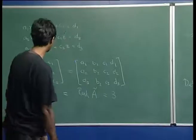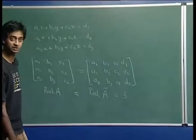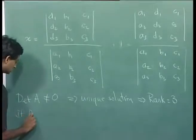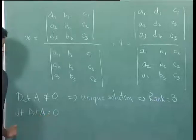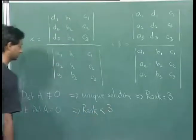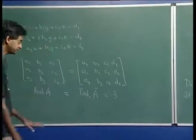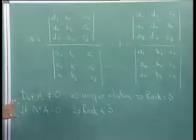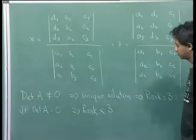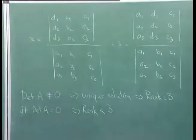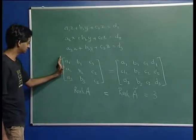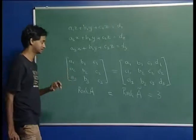The condition for a unique solution to exist is that the determinant should not be equal to 0, or equivalently the rank should be 3. It follows that if determinant A equals 0, then rank is less than 3 — either 2 or 1. So the determinant is intimately connected to the rank. A way to check the rank of a matrix is to calculate the determinant: if it is 0 the rank is less than 3; if it is not 0 the rank equals 3.